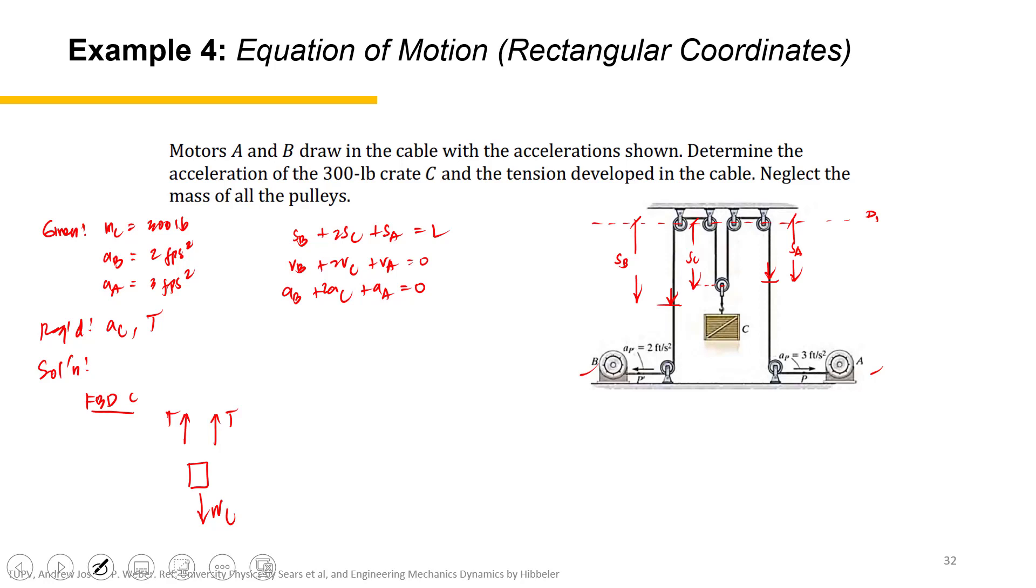We have AB, we have AA, so we can solve for AC. 2AC equals negative AA and negative AB divided by 2. So negative AA is 3 feet per second squared, AB is 2 feet per second squared divided by 2. AC is negative 2.5 feet per second squared.